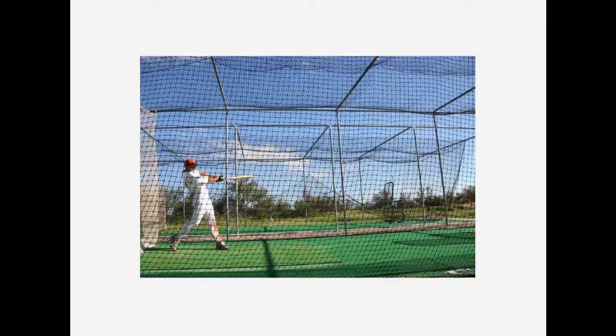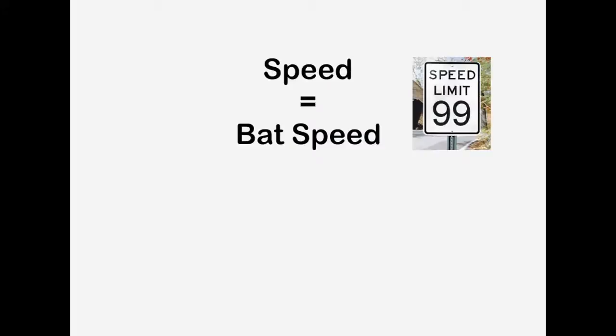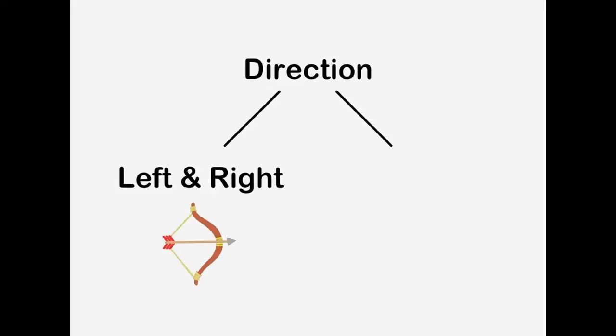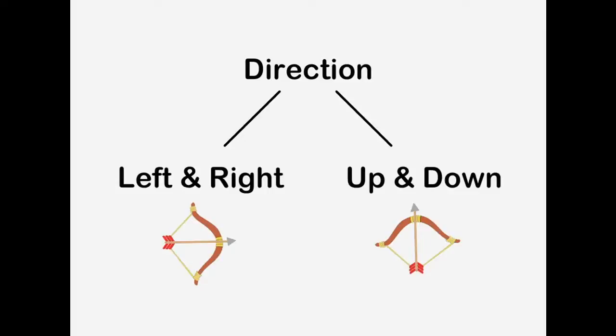Imagine you're in a batting cage taking batting practice. What are you trying to do? You're trying to hit the ball hard, of course, to give it velocity. But you're also trying to hit the ball squarely so that the result is a line drive. If you can maximize both of these, the ball will travel the maximum distance. We'll split direction into two parts: a left-and-right plane and an up-and-down plane. A line drive will be moving a lot in the left-and-right plane but not much in the up-and-down plane. Conversely, if you pop it straight up, it'll be moving in the up-and-down plane and not at all in the left-and-right plane.